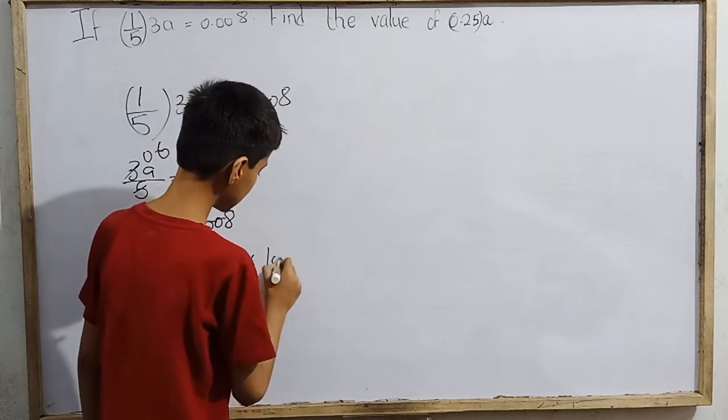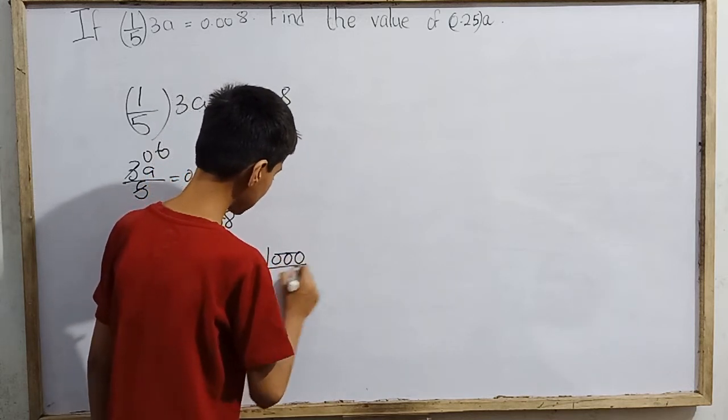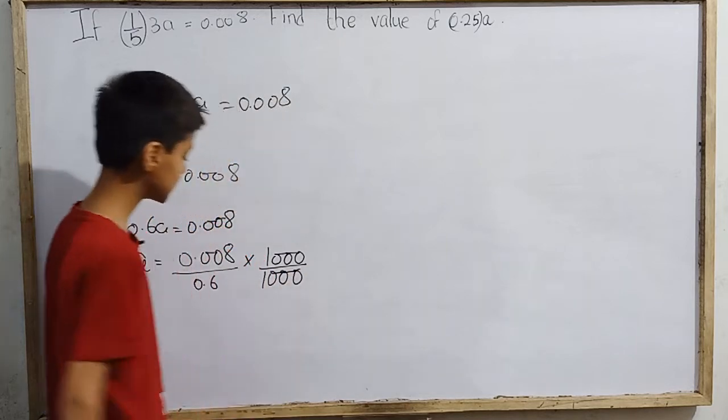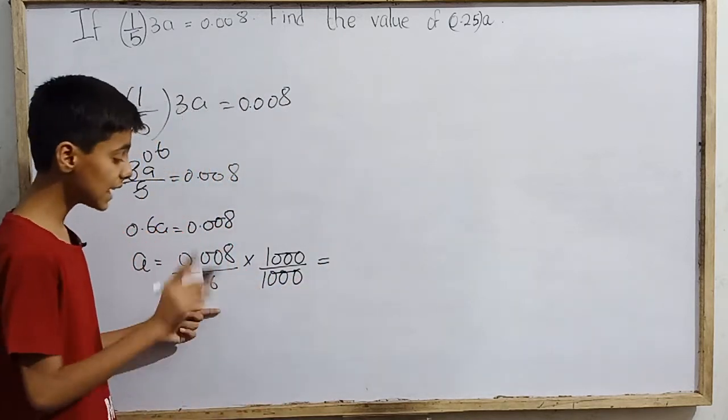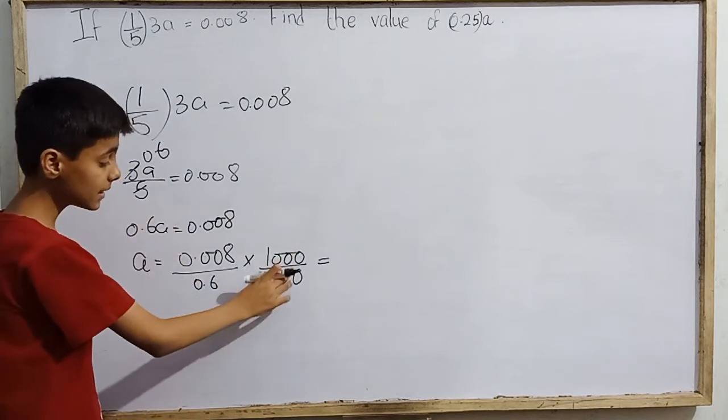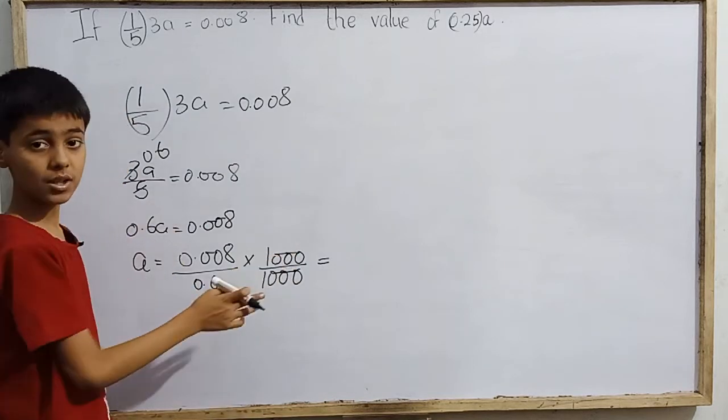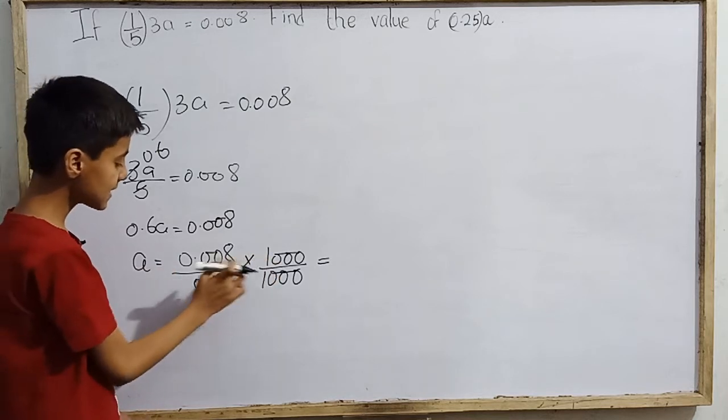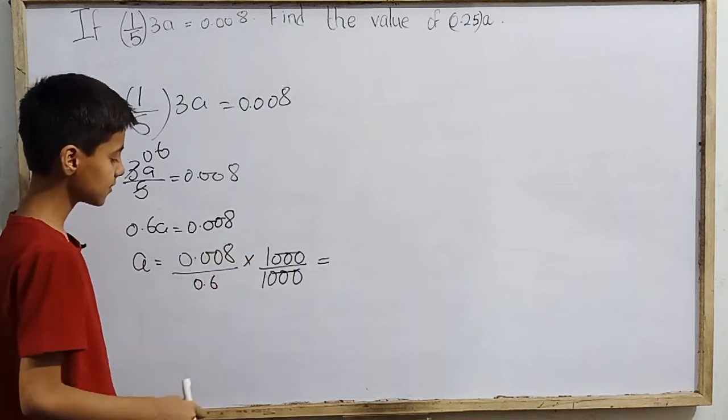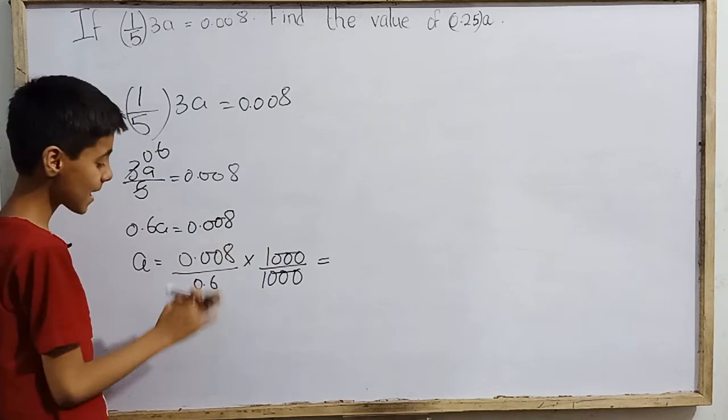1000 and 1000 se multiply karei. So the value is not going to change. Multiply kar sakte hai. We have to make sure whatever number we multiply up and down, we should multiply the same numbers.